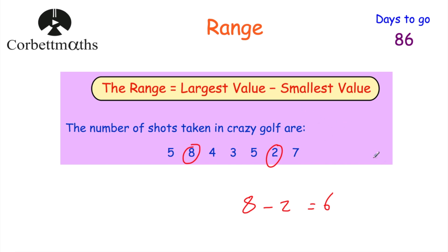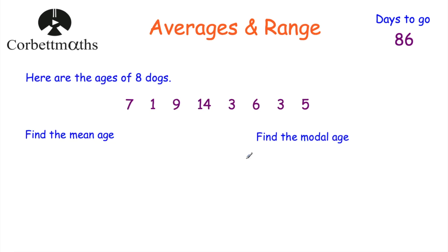So we've looked at the mode — the most common value; the median — arrange numbers in order and find the middle value; the mean — add up the values and divide by the number of values; and the range — the largest value subtract the smallest value. Now we've got some questions for you to try. Pause the video and try this question to see how you get on.